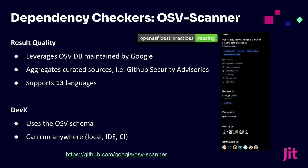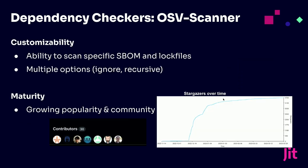Looking at developer experience: it uses the OSV schema and can run anywhere — super easy to use, very lightweight in terms of running. The power of that OSV database that Google manages is a big advantage. You can also see the OpenSSF score showing a passing grade. Looking at the stargazers chart, OSV Scanner — which went officially live around December of last year — has taken off. A lot of key contributors and people using it and liking it.